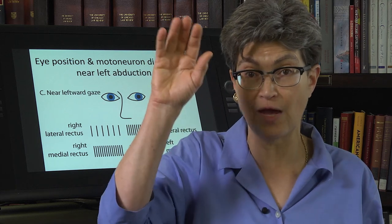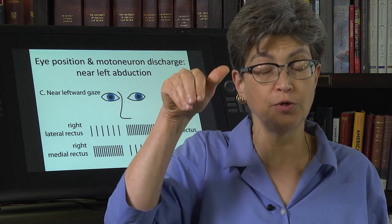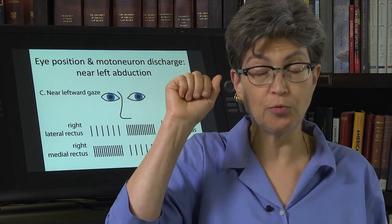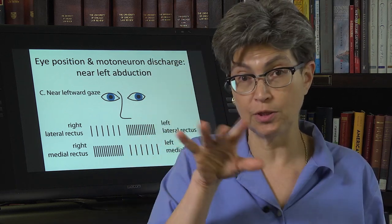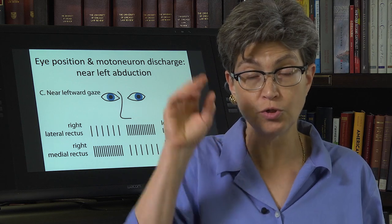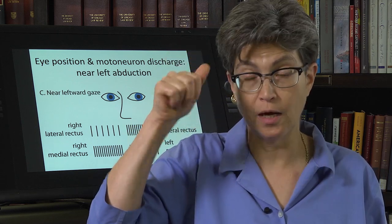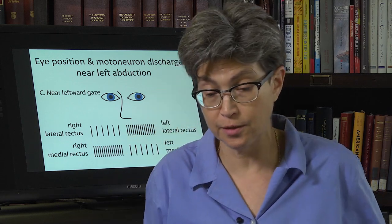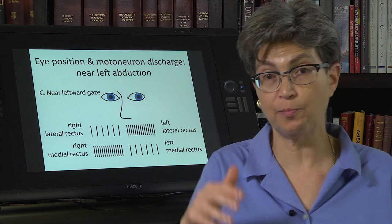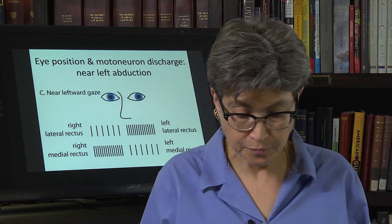This autoimmune attack often starts in the eyes, and the consequences are both diplopia — double vision — and ptosis, a droopy eyelid, because the levator palpebrae is also affected.